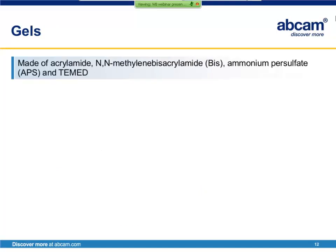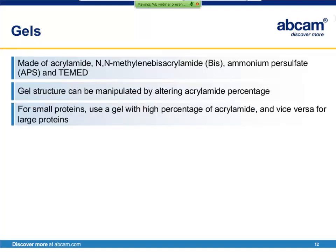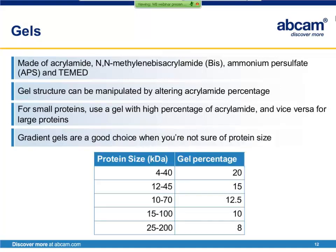Gels are made of polymerized acrylamide cross-linked by BIS in the presence of ammonium persulfate and TEMED, and the structure of the gel can be controlled by altering the acrylamide percentage. By increasing the total acrylamide percentage, the pores of the gel matrix become tighter, which slows down small proteins — so high percentage gels are great when studying smaller proteins. Conversely, a lower acrylamide percentage results in larger pores, allowing larger proteins to migrate more easily and separate more efficiently. There are also gradient gels consisting of layers of different acrylamide percentages, so that both small and large proteins can be efficiently run on the same gel — recommended if you're analyzing a large range of proteins or are unsure of the molecular weight of your protein of interest.